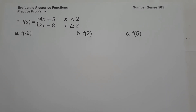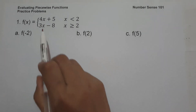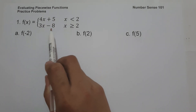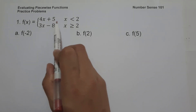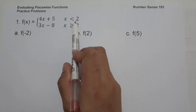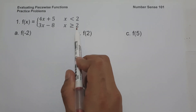For today's video, we are going to have a practice problem on how to evaluate a piecewise function. A piecewise function is a function that can be broken up into many parts. For example, this piecewise function can be equal to 4x plus 5 or 3x minus 8 depending on the x value — specifically, 4x plus 5 if x is less than 2, or 3x minus 8 if x is greater than or equal to 2.